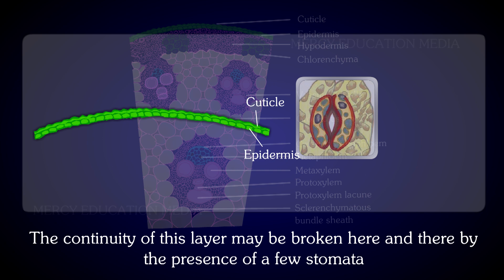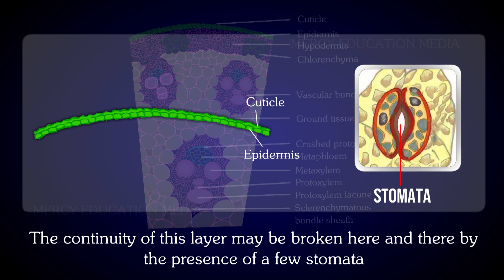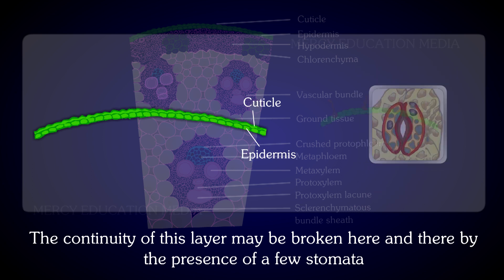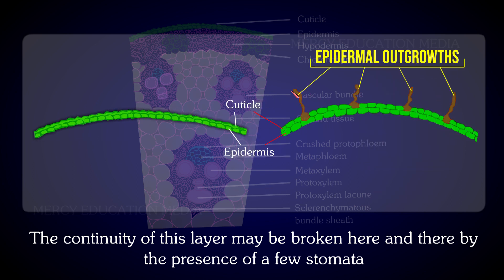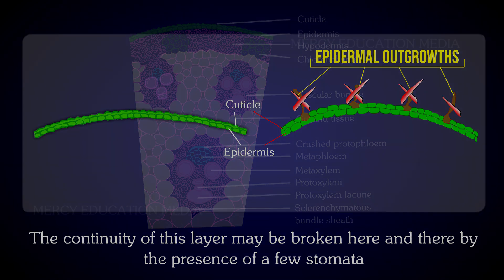The continuity of this layer may be broken here and there by the presence of a few stomata. There are no epidermal outgrowths.